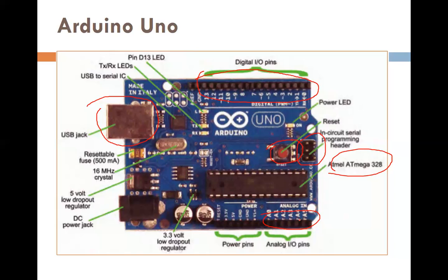The DC jack accepts 9 volt or 12 volt input, which is stepped down and converted to 5 volt with the help of the LM7805 regulator IC. That 5 volt is given to peripheral devices as well as the microcontroller. Another regulator converts 5 volt into 3.3 volt. The power pins available are V-in, Ground, 5 volt, and 3.3 volt. V-in is whatever input is given to the DC jack, and 3.3 volt is converted by the 3.3 volt regulator.